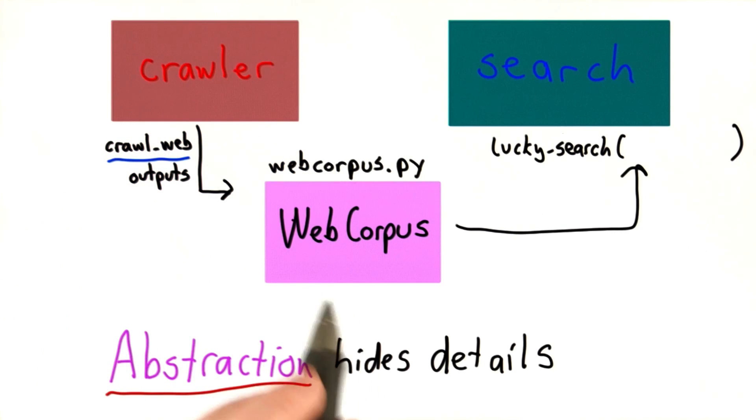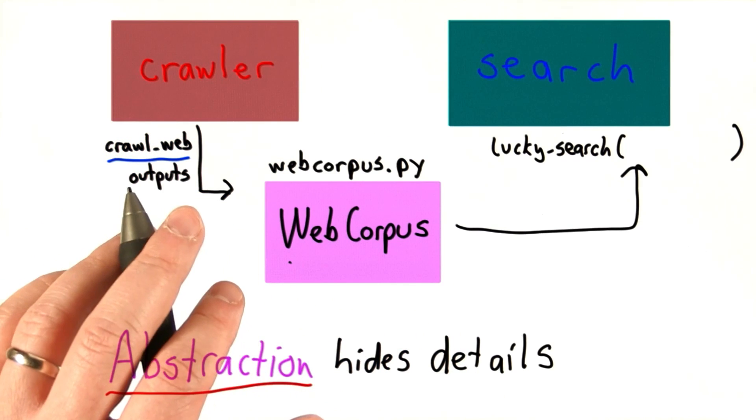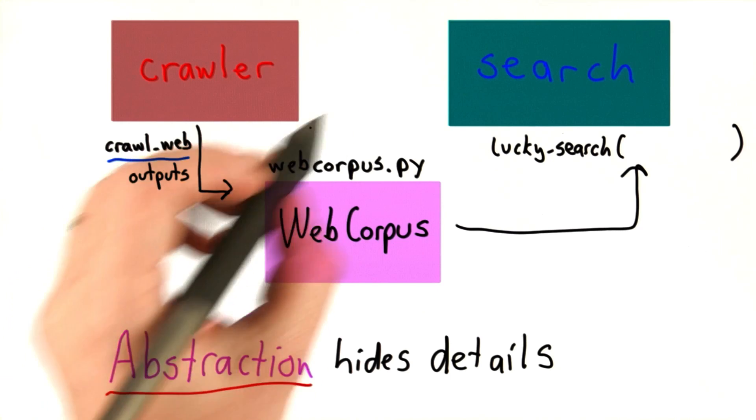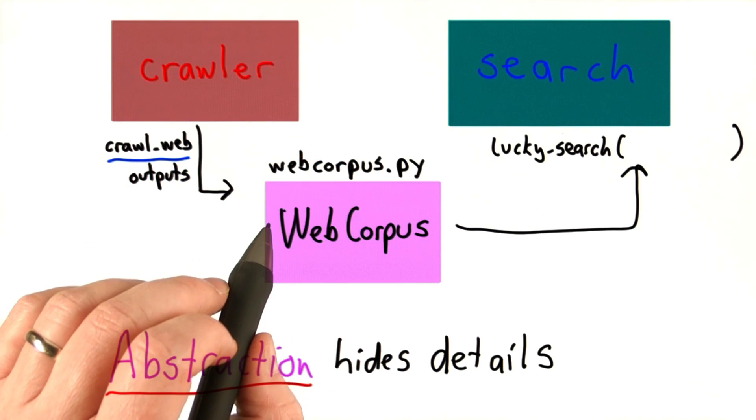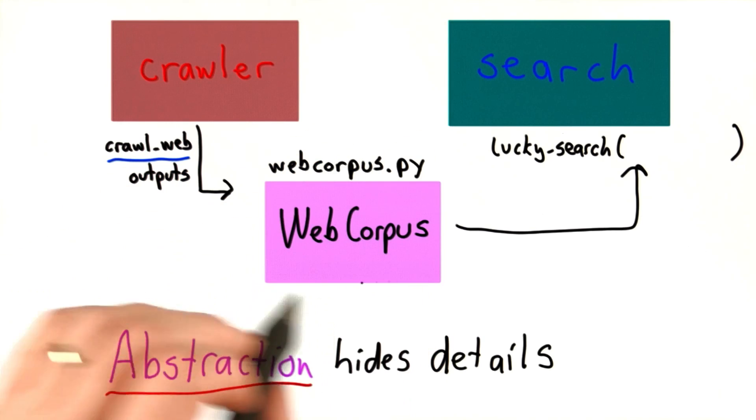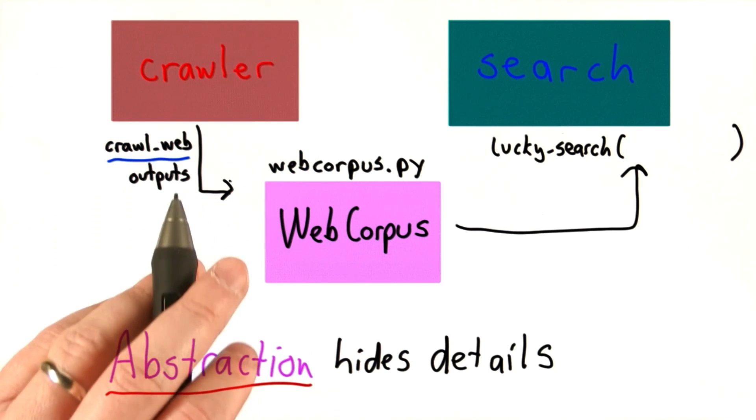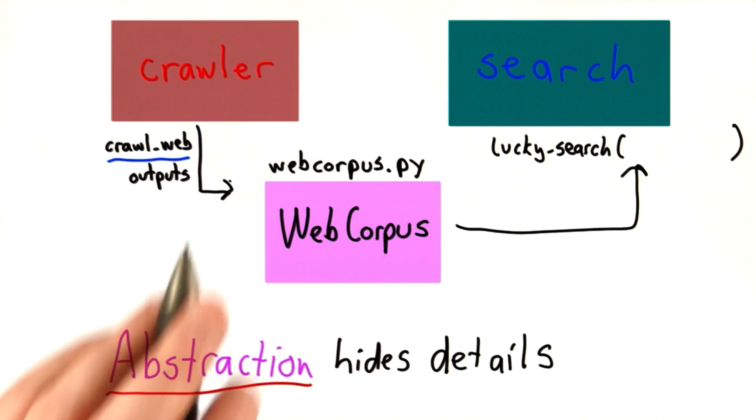What this is, is actually a new type, and Python provides a way to define new types. They're called classes. Before we get into how to create our own type, like the web corpus type that we need here, we're going to step back and learn more about how types work in Python.